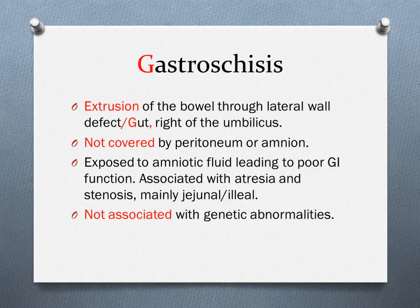Gastroschisis can be thought of as the equivalent of adult herniation in the embryo. Just as a weakness in the abdominal wall in adults allows bowel to herniate through, in the embryo there is a weakness in the lateral wall — mainly to the right of the umbilicus — and the bowel extrudes through that defect. This time the developing midgut is not covered by peritoneum and amnion, so the bowel is exposed to amniotic fluid, leading to inflammation and edema of the bowel. This is associated with atresia and stenosis, mainly in the jejunum and ileum.